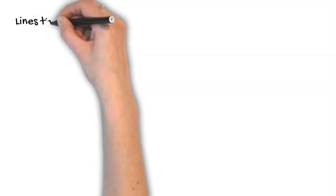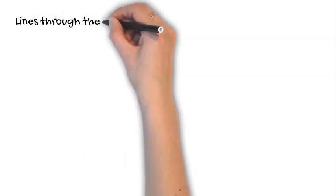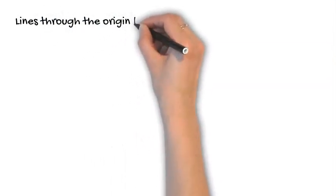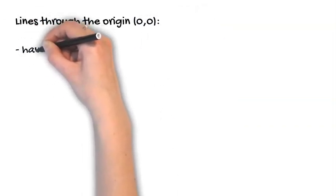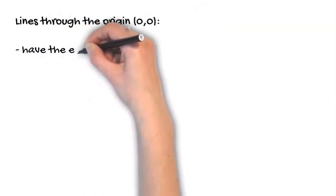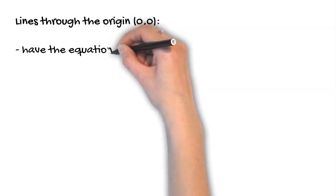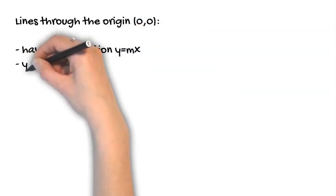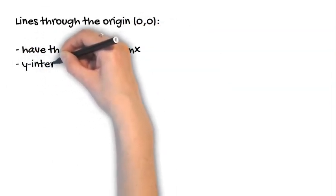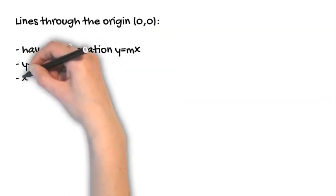Lines that run through the origin have the equation y equals mx, where m is the gradient of the line, which we'll look at in our next video. It's essentially how steep the line is. That m value, like a and b, is just a constant value or a number.